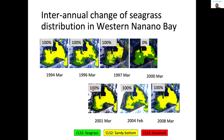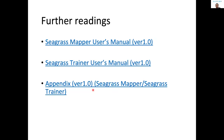Some of this work has been successful, and some — especially changing the inter-annual changes of seagrass distribution — is not really working as expected. There is more information in the manuals of Seagrass Mapper and Seagrass Trainer appendix. This is just one example of mapping seagrass habitat using Seagrass Mapper, and I hope this case study gave you some idea of how to try Seagrass Mapper in your own case study site. Thank you very much.